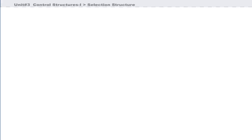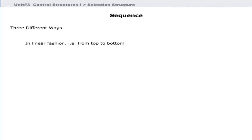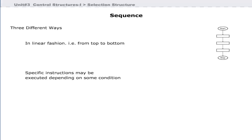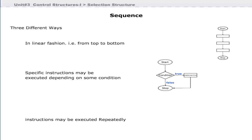Before writing a computer program, you must decide the sequence in which the instructions will be executed. Instructions may be executed in three different ways: in linear fashion from top to bottom, specific instructions may be executed depending on some condition, or instructions may be executed repeatedly.